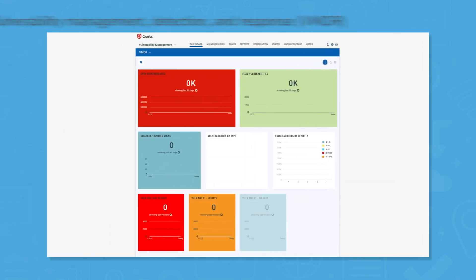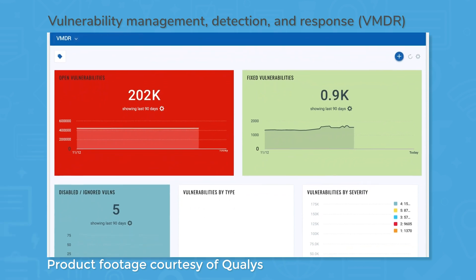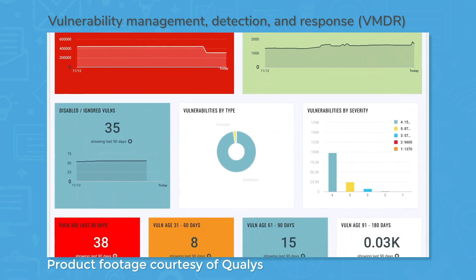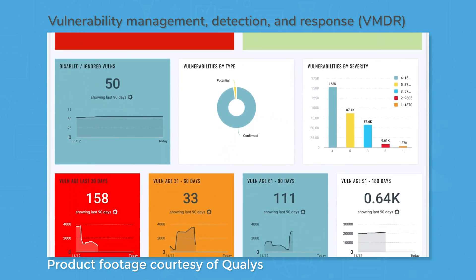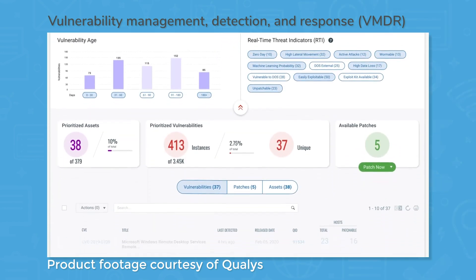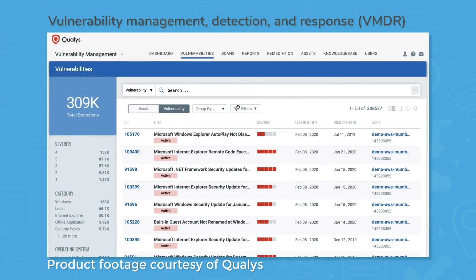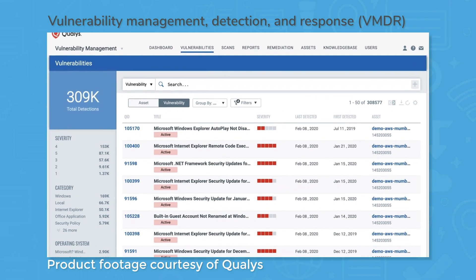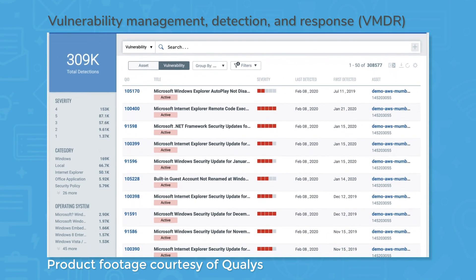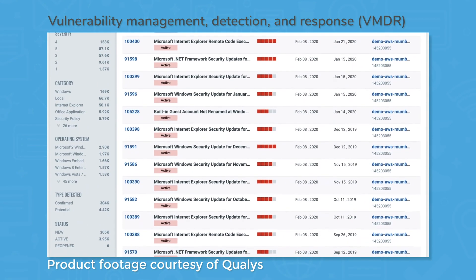Vulnerability management lies at the heart of the Qualys Cloud Platform. Once the system identifies your IT assets, it scans them to identify and analyze vulnerabilities and misconfigurations. You get a prioritized list of vulnerabilities by greatest risk, and you can deploy patches and take steps for remediation right from the system. You can see a snapshot of VMDR through a customizable dashboard, which lets you see stats like total open vulnerabilities for a certain time frame, vulnerabilities by type, and vulnerabilities by severity.